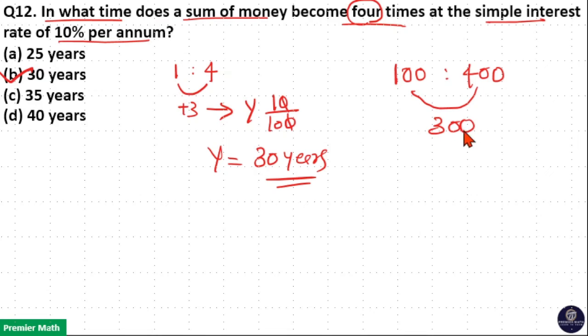So, this 300 rupees is the interest I received in some years. Now, this 300 rupees I received at the rate of 10% per annum.